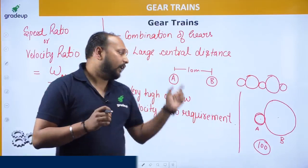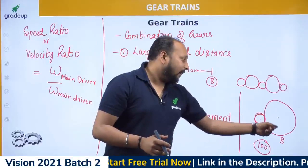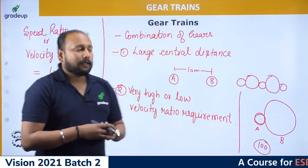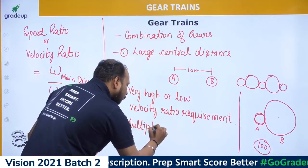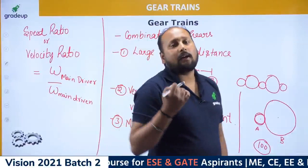Instead of going to a two-gear system with very large gears, we prefer a gear train because the inertia force on the smaller gear's teeth would cause them to break. The third important application is whenever we need multiple velocity ratios — in that case we prefer gear trains.